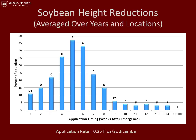This graph represents soybean height reductions, averaged over all years and locations. On the y-axis is percent reduction and on the x-axis is the application timing. The greatest height reductions were observed at weeks five and six, ranging from about 42% to 47% height reduction. Just like the visual injury trend, we saw no significant height reductions after the eight-week application was made.